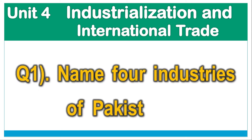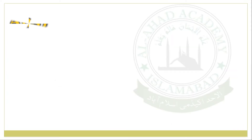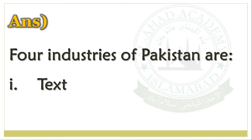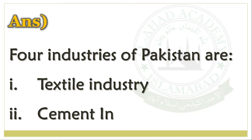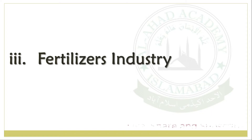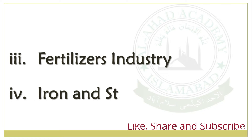Question No. 1: Name 4 industries of Pakistan. Answer: 4 industries of Pakistan are Textile industry, Cement industry, Fertilizers industry, Iron and Steel industry.